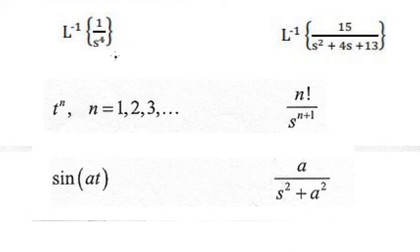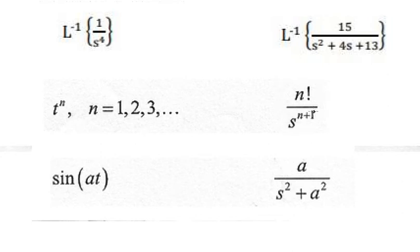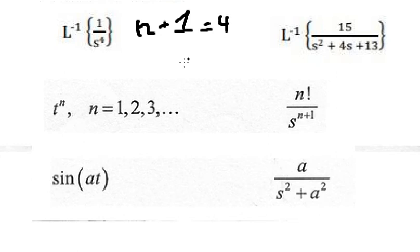Question number one: we have one over s to the power of four. If we look carefully, we have s to the power of n plus one, so that means n plus one equals to four, and we can find the value of n — that is four minus one, which gives us three.